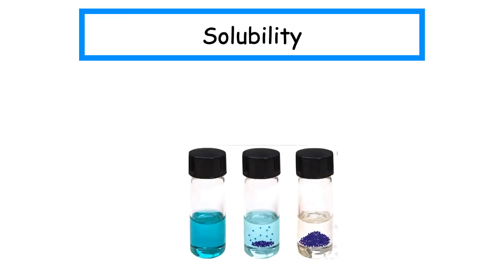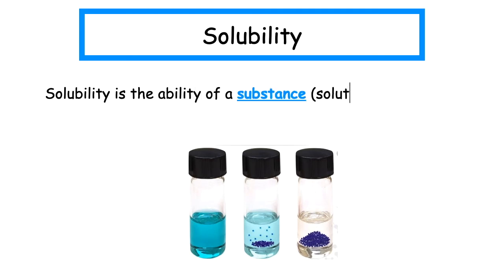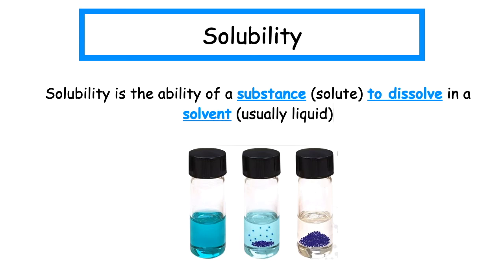The last property we look at is solubility. Solubility is the ability of a substance, which is normally known as a solute, to dissolve in a solvent, which is usually a liquid. If it is able to dissolve, we say that the substance is soluble. And if it is unable to dissolve, we say that the substance is insoluble.